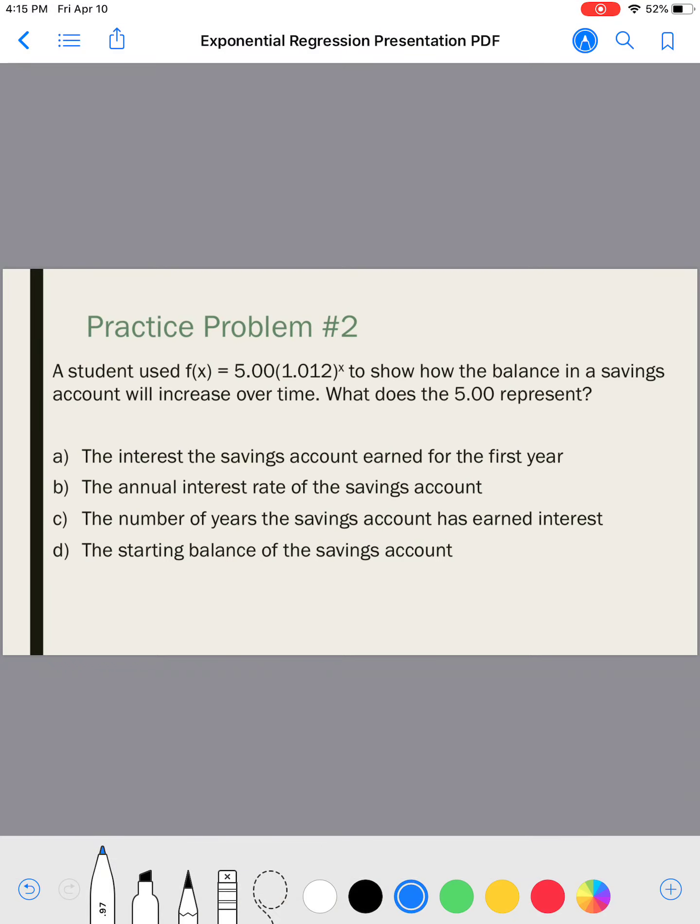Okay, a student used this equation to show how the balance in a savings account will increase over time. What does the 5.00 represent? So, this is only asking about one part of this. Well, 5, is that the A or the B? The A. So, I know this has to do with the initial amount. How much I start with. Initial amount, okay?